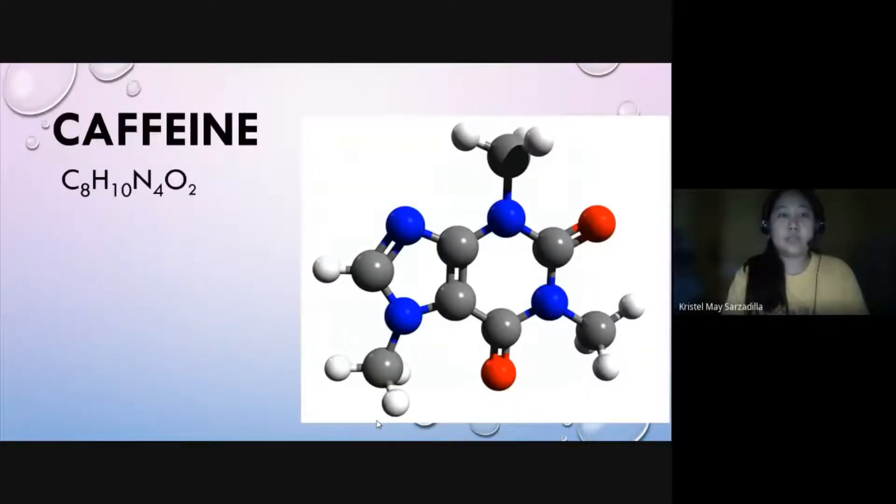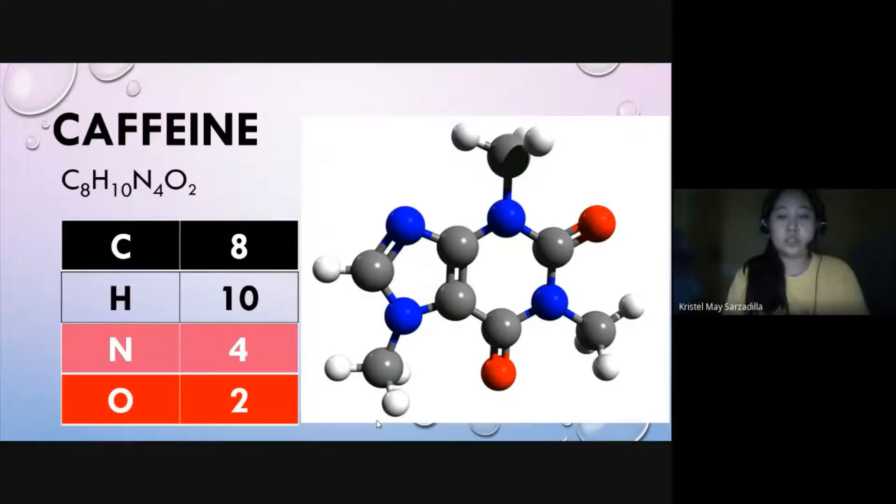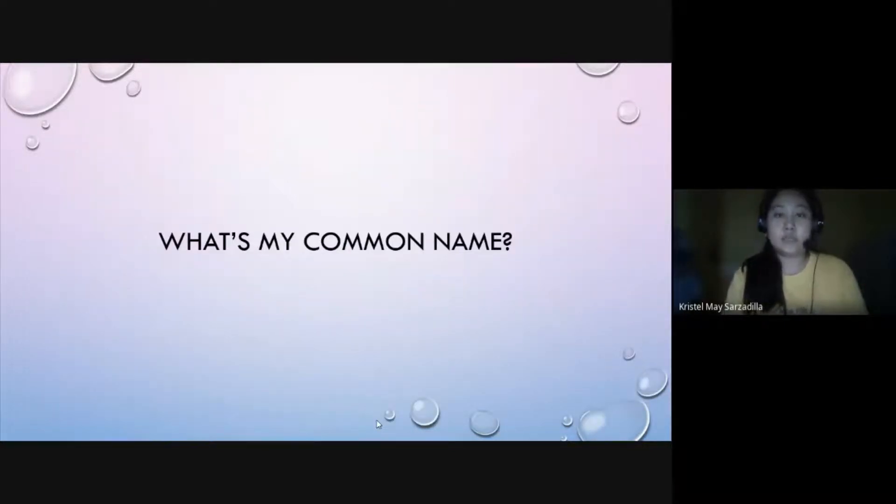Another example, caffeine. C8H10N4O2. There are eight carbons, 10 hydrogen atoms, four nitrogen atoms, and two oxygen atoms. Well represented by corresponding colors. Now, let's have this activity. What's my common name? I'm going to give you three clues. And all you have to do is to guess the common name of the substance.